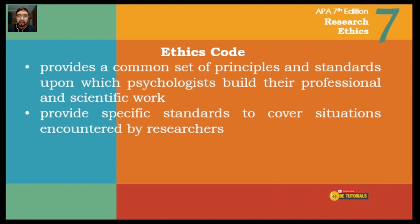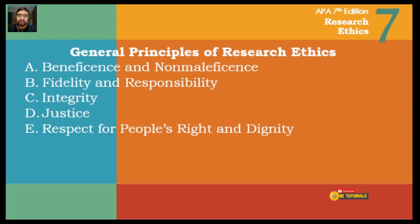The ethics code provides us a common set of principles and standards that we must follow as researchers. It provides specific ways to cover situations encountered by researchers. The general principles of research ethics are: first, beneficence and non-maleficence; second, fidelity and responsibility; third, integrity; fourth, justice; and last, respect for people's rights and dignity.